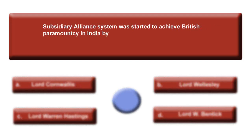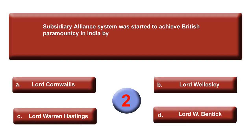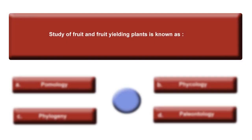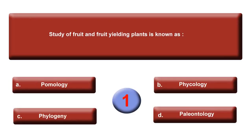The Subsidiary Alliance System was started to achieve British paramountcy in India by — and your time starts now. Option A: Lord Cornwallis. Option B: Lord Wellesley.